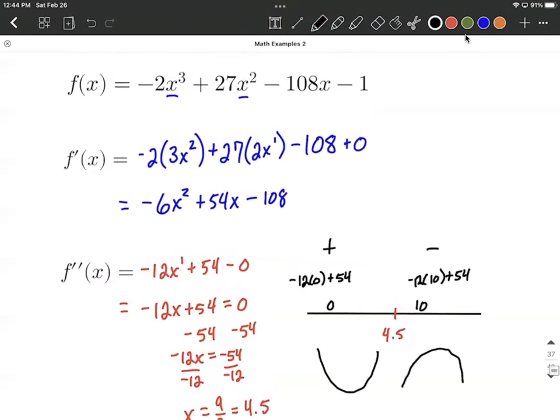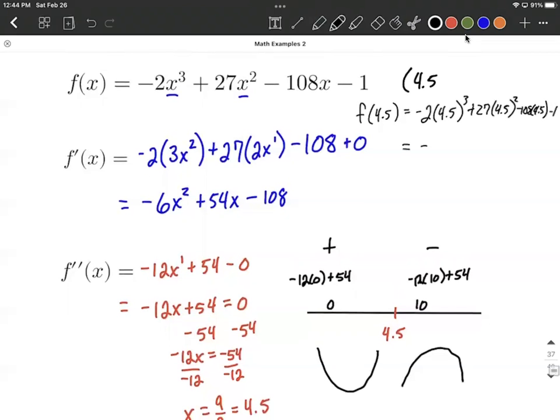Now to get the y value of that inflection point, what we need to do is we need to go back up to the original function and plug it in. So if you have an x value, you need to evaluate that x value back into the original function to determine your y value that goes with it. So we're going to plug it back in 4.5 cubed plus 27 times 4.5 squared minus 108 times 4.5 minus one at the end. I won't bore you with all the details on this. I just put it in my calculator, eventually got out negative 122.5. And that's going to be the y value that goes along with this x value. So 4.5 comma negative 122.5.